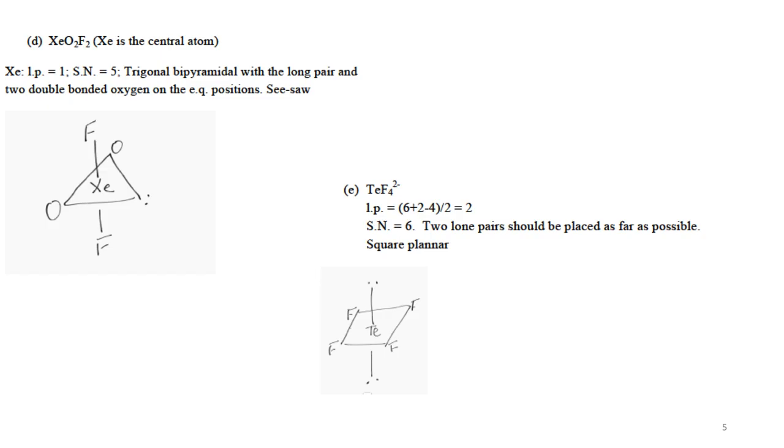Telluride tetrafluoride 2-. Two negative charges are located on tellurium. You should add 2 to the number of valence electrons, which is 6, and subtract 4, the number of electrons used to form covalent bonds with fluorine. That gives you 2 lone pairs. Steric number equals 6, so octahedral structure. The 2 lone pairs should be on top and bottom, as far away from each other as possible. The overall shape would be square planar.